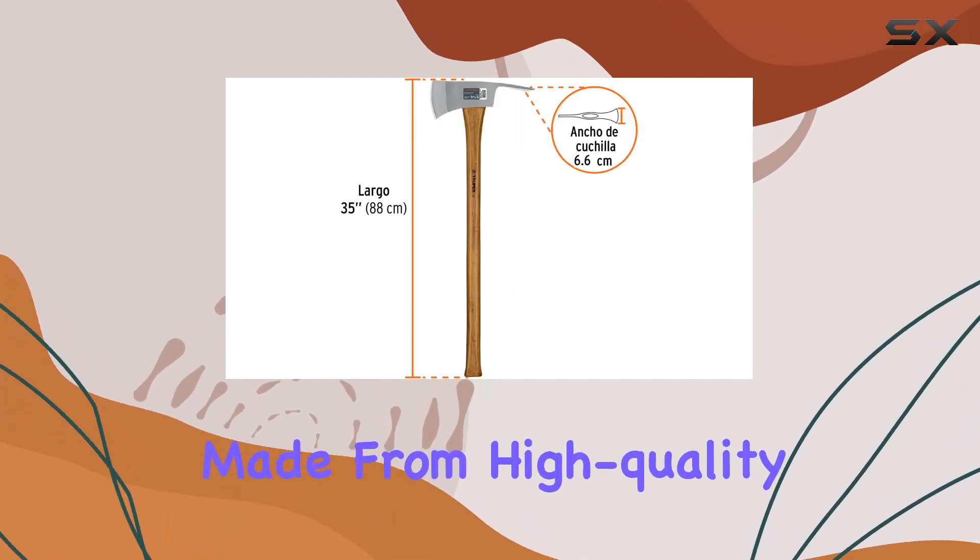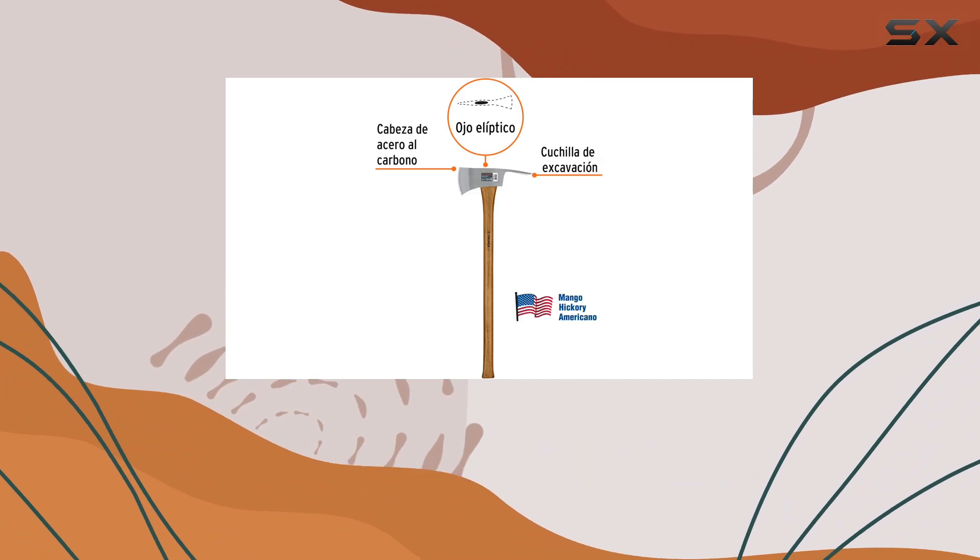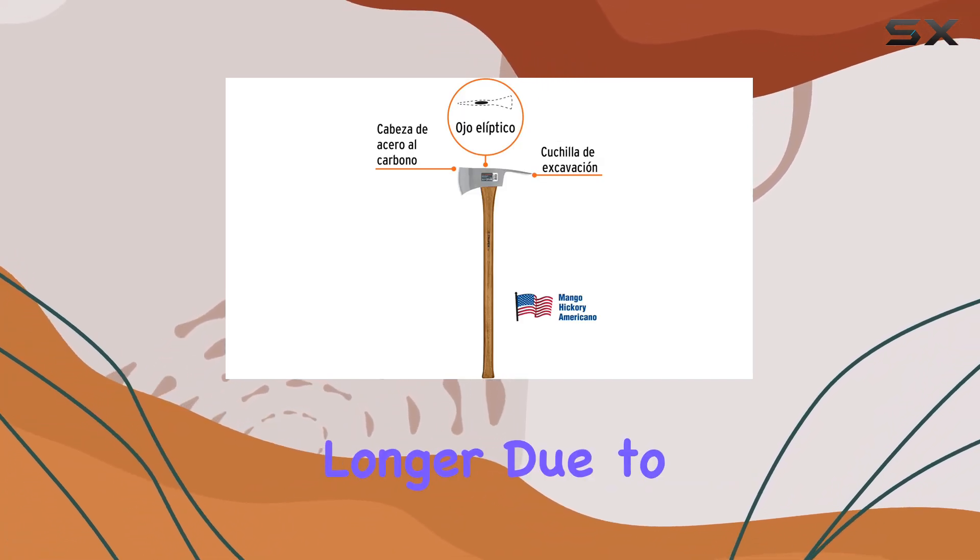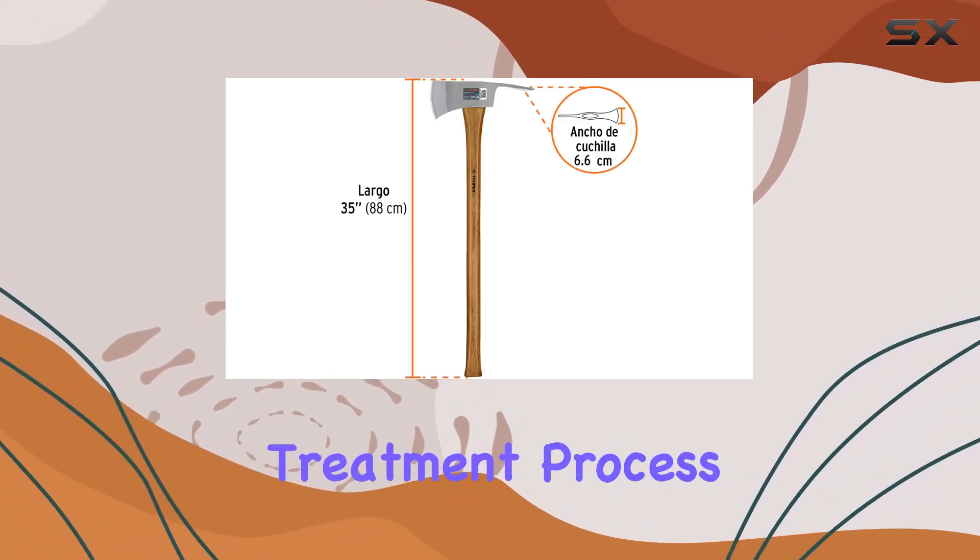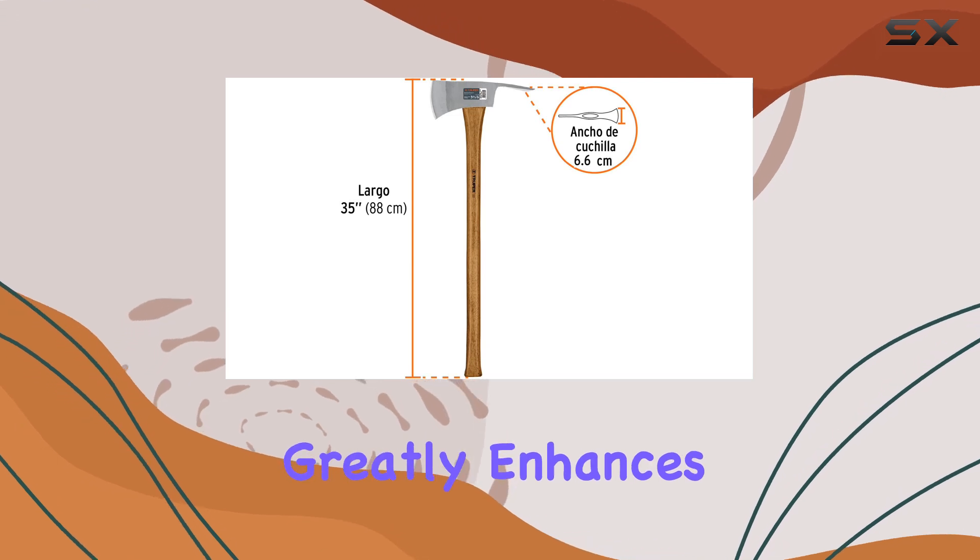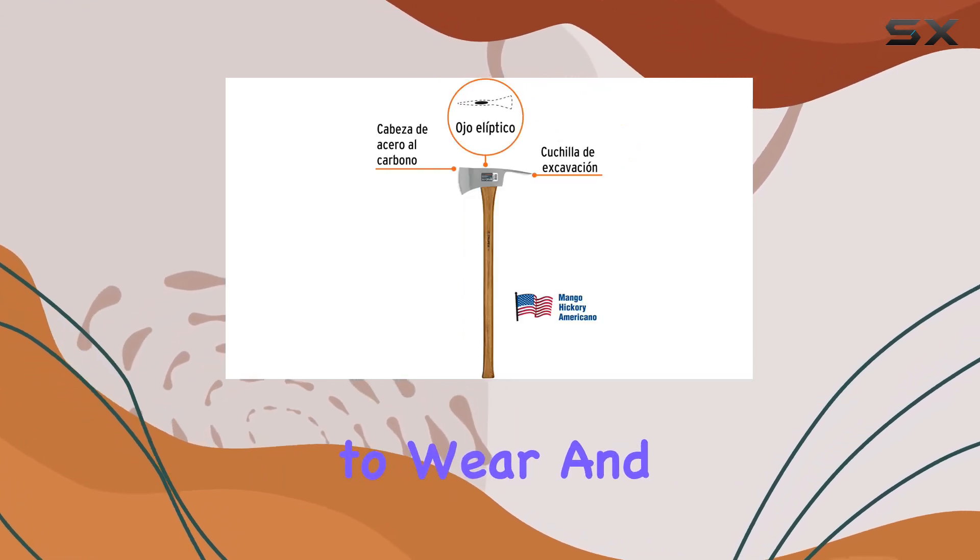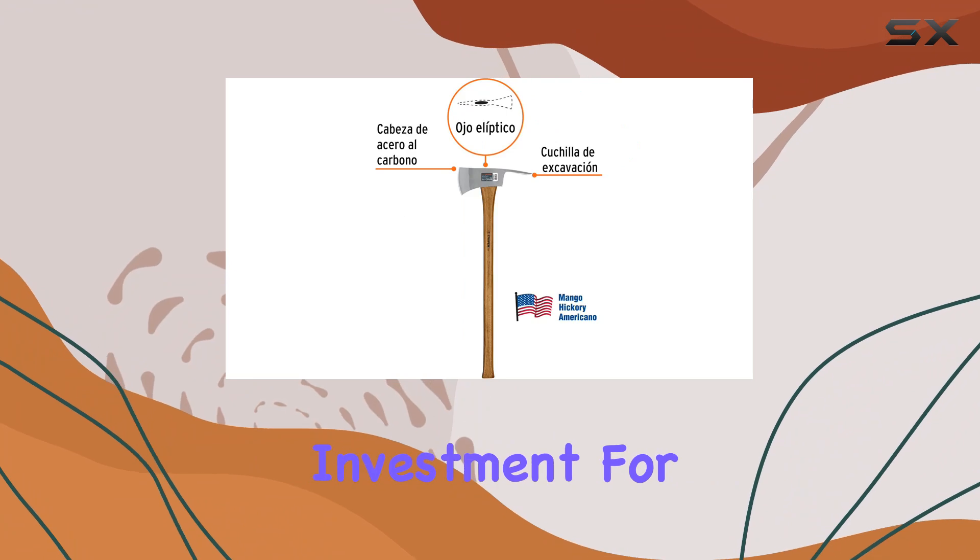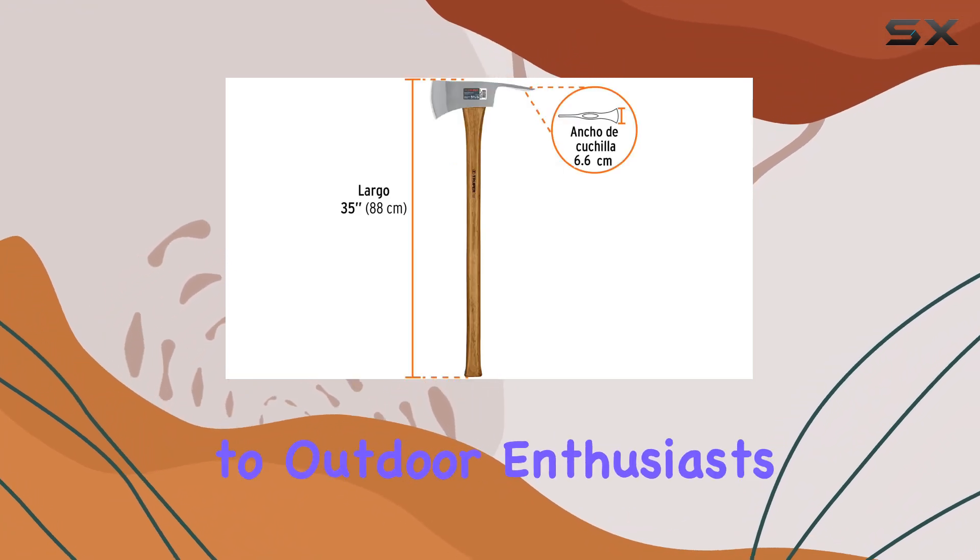The head is made from high-quality carbon steel, ensuring that it maintains its sharpness longer due to a double heat treatment process. This feature greatly enhances the axe's resistance to wear and tear, making it an excellent investment for anyone from professionals to outdoor enthusiasts.